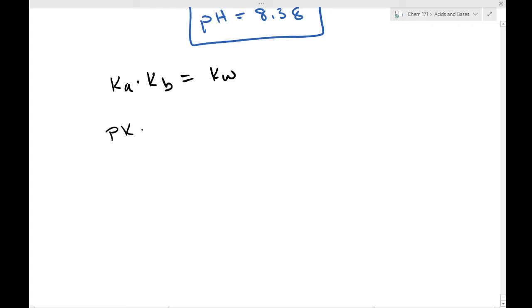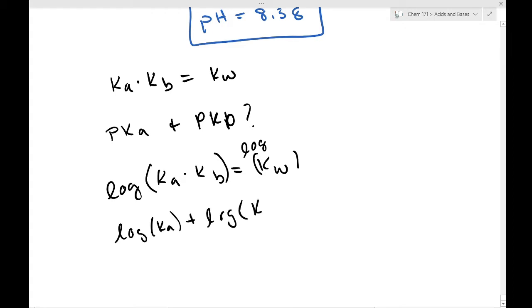Okay, well, what about pKa and pKb? pKa and pKb. Remember P, the P of anything is just the negative log of that thing, right? So if we start with Ka times Kb is equal to Kw, right? And we take the log of both sides. Okay, bear with me here. It's going to be a little confusing in the beginning, but we'll just take the log of both sides.